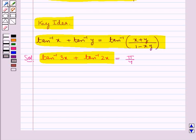Using this we get tan inverse of 3x plus 2x upon 1 minus 3x into 2x. This is equal to pi by 4.